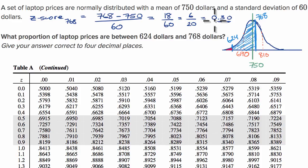Our hundredths place is zero, right over here. So this is the proportion that is less than $768: 0.6179. So now let's do the same exercise, but do it for the proportion that's below $624.